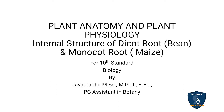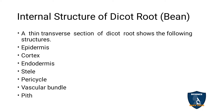Today we will discuss the internal structure of dicot root and monocot root in plant anatomy and plant physiology. We had already discussed the vascular tissue system, epidermal tissue system, and ground tissue system. First, we will discuss the internal structure of dicot root. Taking a transection and viewing it under the microscope, you will see the layers and cells present. The dicot root comprises the following structures: epidermis, cortex, endodermis, stele, pericycle, vascular bundle, and pith.